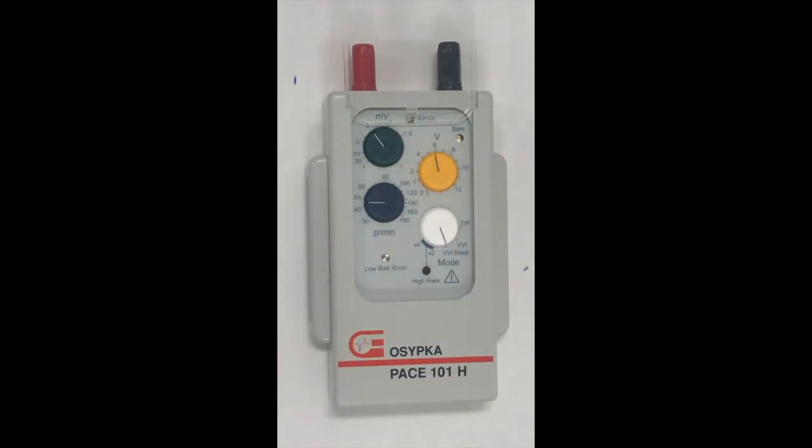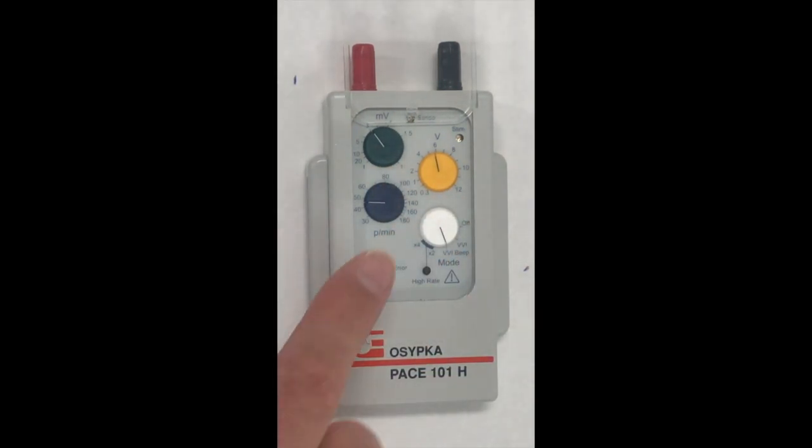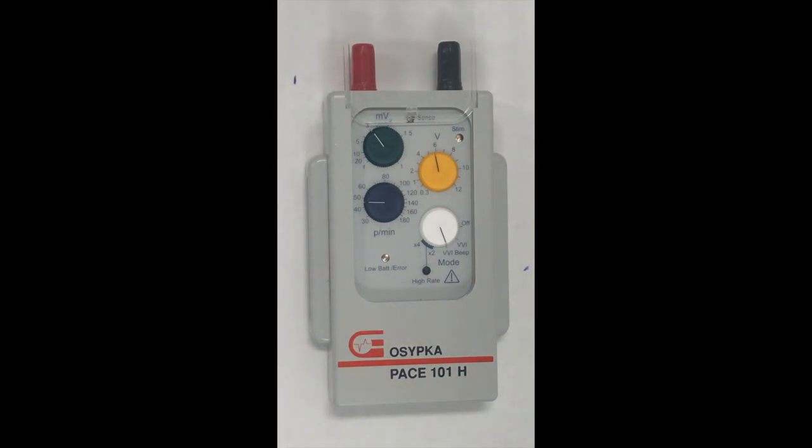If the device is sensing correctly, this stimulation light here, which is currently yellow, will turn to green, and that means it's detecting each R-wave.